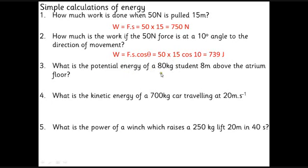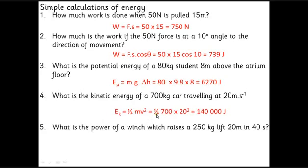If we raise an 80 kilogram student 8 meters above the atrium floor, that's what you do when you come up to D3. The potential energy is Mg delta H, 80 is the mass, 9.8 gravity, times 8 meters is the change in height, gives us 6,270 joules. A 700 kilogram car travelling at 20 meters per second: this is kinetic energy, half Mv squared. That's a half times 700 times 20 squared. Notice that only the 20 is squared. That's 140,000 joules.